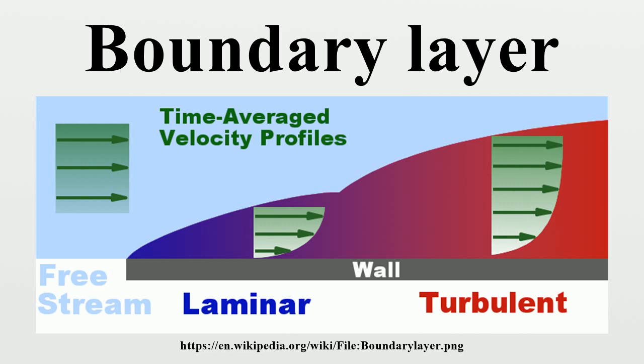At high Reynolds numbers, typical of full-sized aircraft, it is desirable to have a laminar boundary layer. This results in a lower skin friction due to the characteristic velocity profile of laminar flow. However, the boundary layer inevitably thickens and becomes less stable as the flow develops along the body, and eventually becomes turbulent — the process known as boundary layer transition. One way of dealing with this problem is to suck the boundary layer away through a porous surface, but this is usually impractical due to its mechanical complexity. Natural laminar flow techniques push the boundary layer transition aft by reshaping the aerofoil or fuselage so that its thickest point is more aft and less thick, reducing velocities in the leading part.